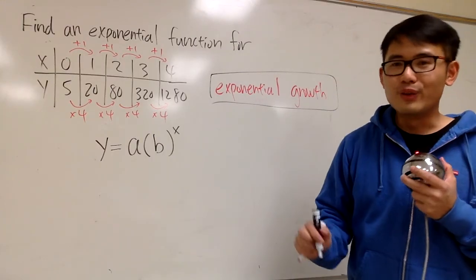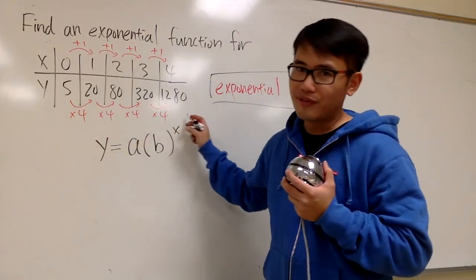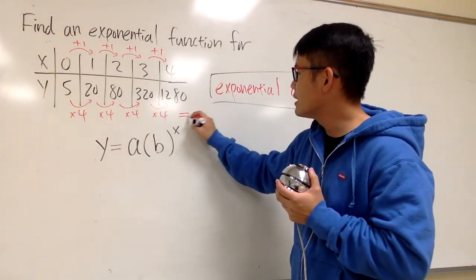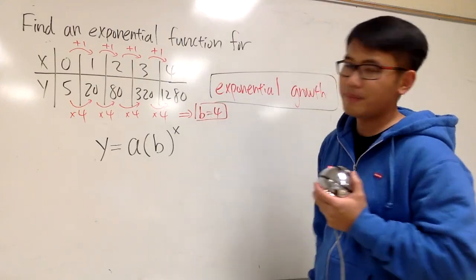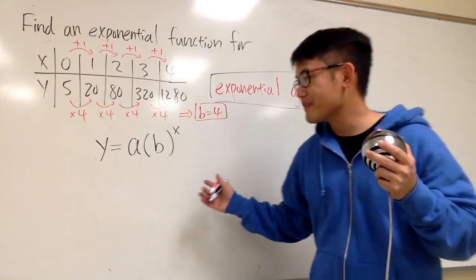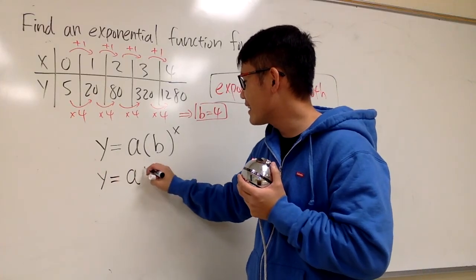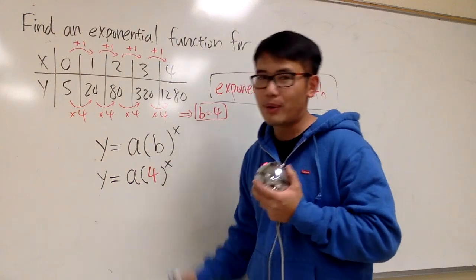And in fact, we know one value already. This is 4. We multiply the 4 over and over. Right here, it tells us that b is equal to 4. We know this right away. That's the base. Therefore, you know y is equal to a times b is 4 and then raised to the x power, like that.